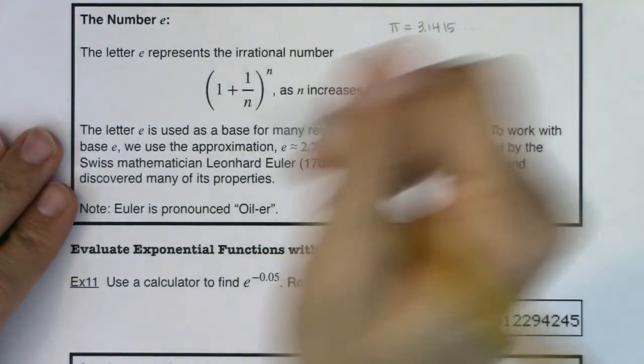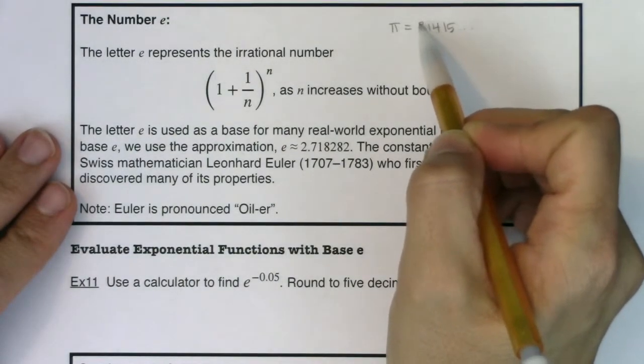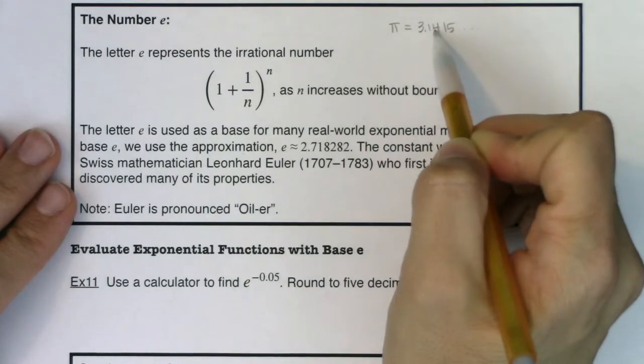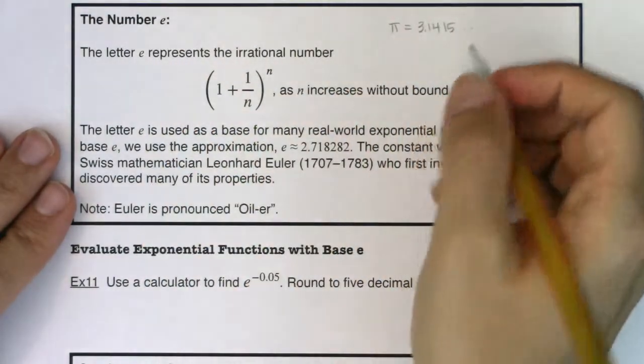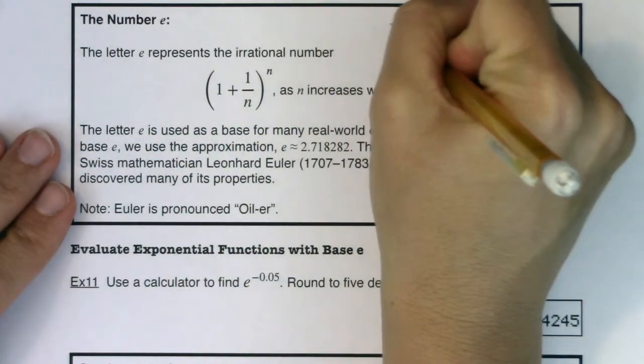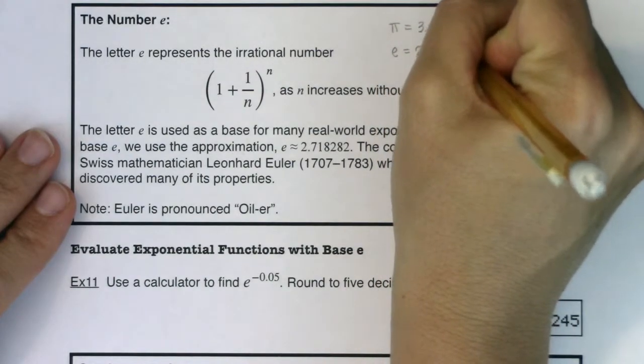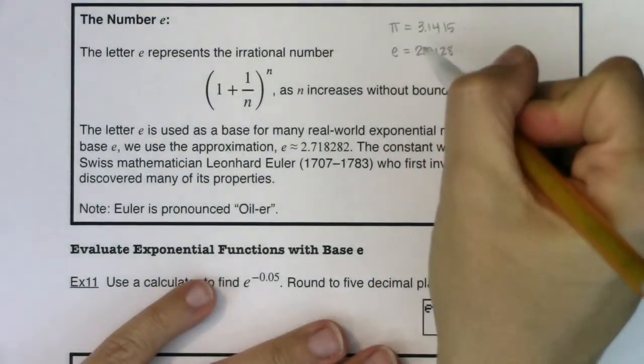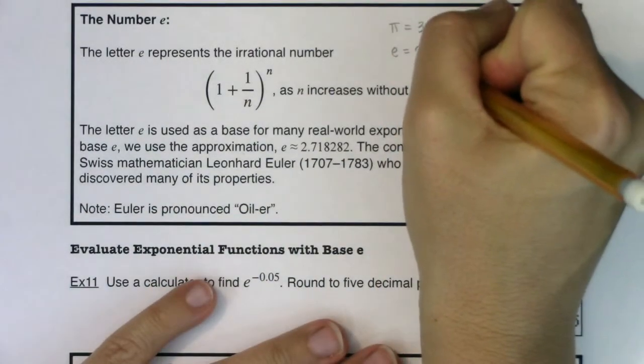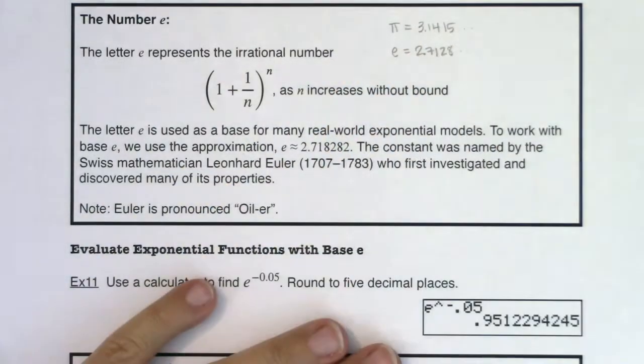On March 14th, people eat pie because March is the third month of the year and then the 14th day of that month. So people are very well versed in pi, but we're not very well versed in e. And it would be fun, or maybe not so much fun, if we all took e on February 7th, but that is just not as celebrated as pi day.